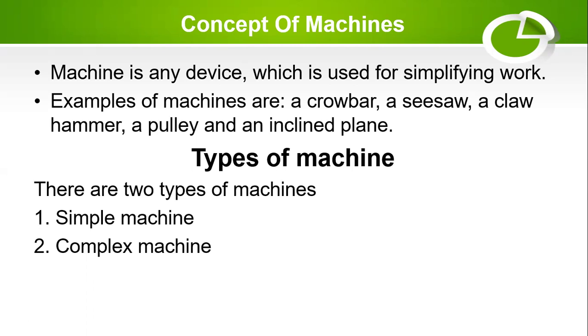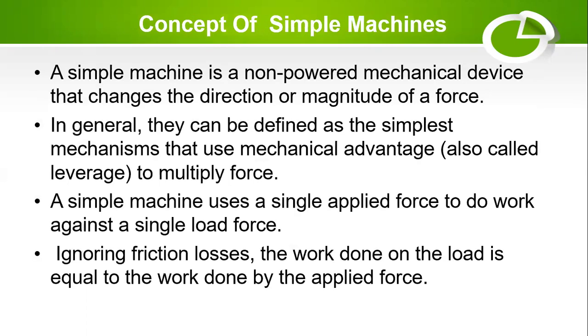Simply, there are two types of machines: the simple machines and the complex machines. We'll dive more into the simple machines. A simple machine is a non-powered mechanical device that changes the direction or the magnitude of a force.